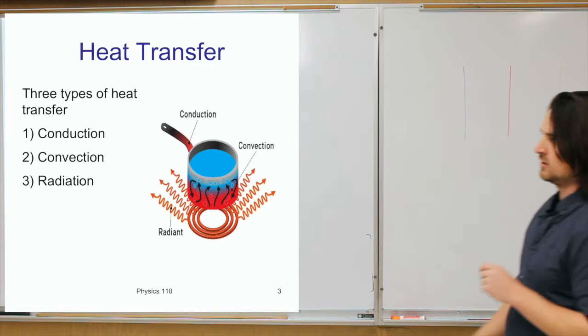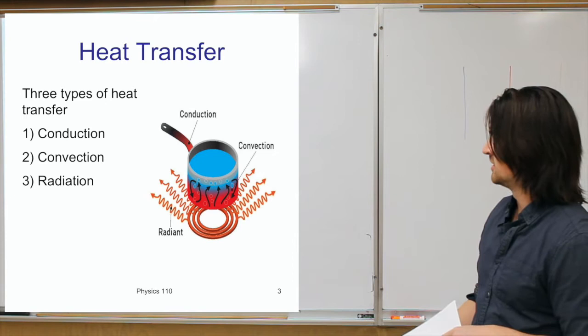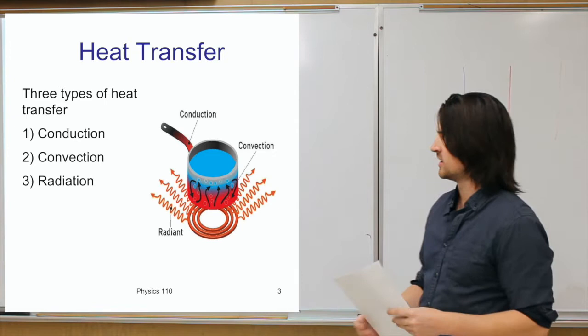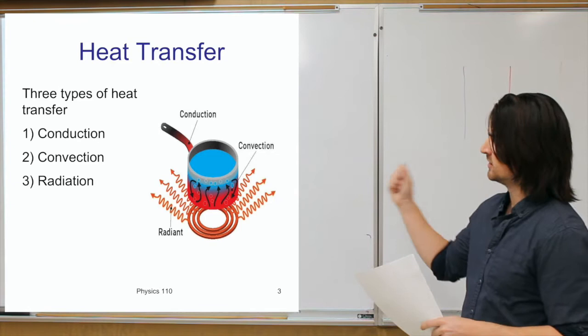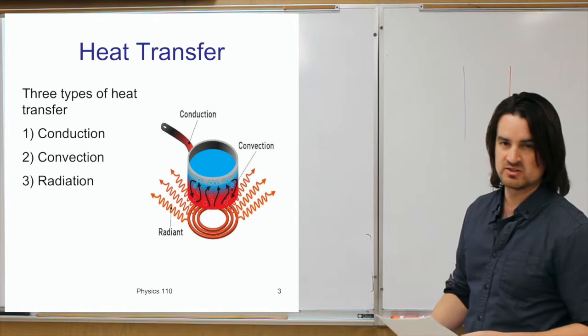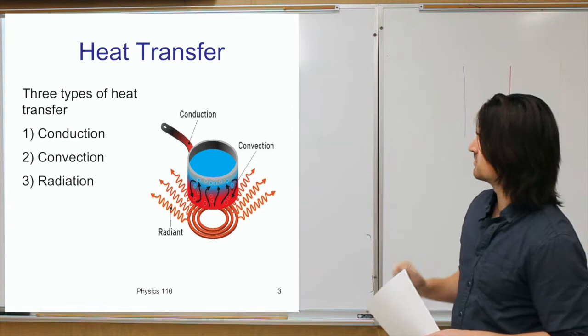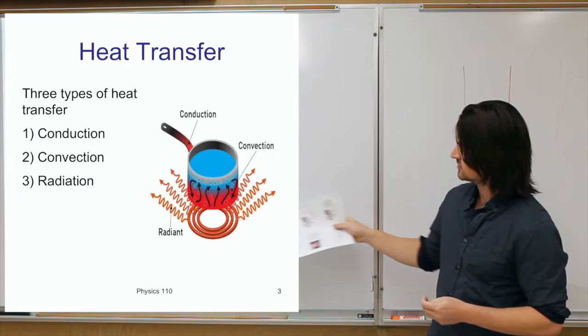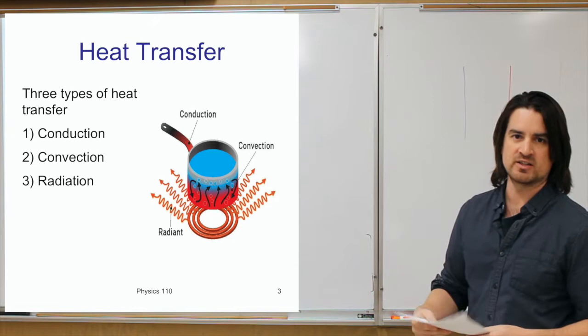There are basically three different kinds of heat transfer. The first is conduction, then convection, and radiation. As you can see in this diagram: heat radiation — the last one — involves electromagnetic waves that carry energy in order to transfer heat between objects. Convection is what's happening inside a pot of water, where convection currents circulate hotter water from the bottom up to the top to heat everything up.